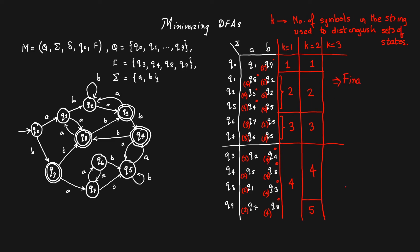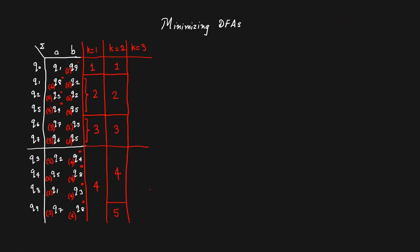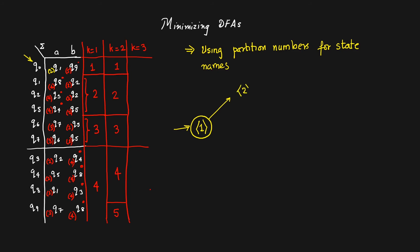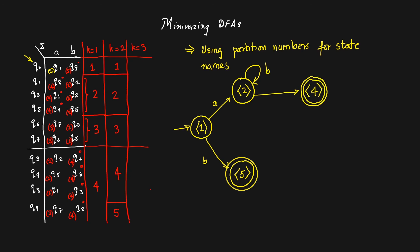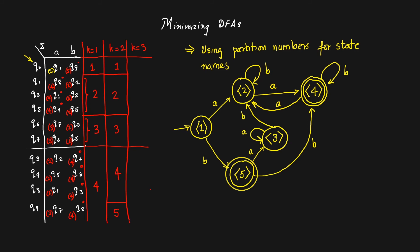Since two consecutive iterations produced the same number of partitions, we stop and draw the minimal DFA using the partitions from the last iteration: 1, 2, 3, 4, and 5 as state names. Partition 1 contains the initial state q0, so it is the initial state of the minimized DFA. On 'a', partition 1 goes to partition 2; on 'b', partition 1 goes to partition 5. On 'b', partition 2 stays in partition 2; on 'a' it goes to partition 4. From partition 4, on 'a' we go to partition 2, on 'b' partition 4 stays in partition 4. From partition 5, on 'a' we go to partition 3, on 'b' we go to partition 4. From partition 3, on 'a' we remain in partition 3; on 'b' we go to partition 2.